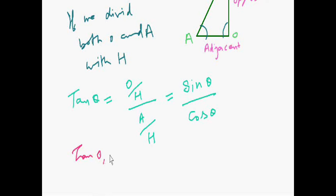for 0 degree, 30 degree, 45 degree, 60 degree or 90 degree, at that time we will calculate sin 0 degree divided by cos 0 degree,